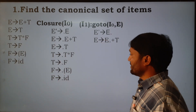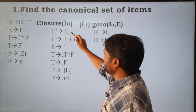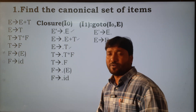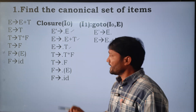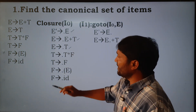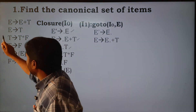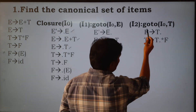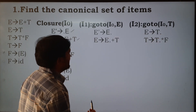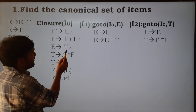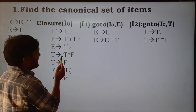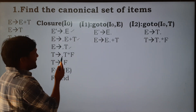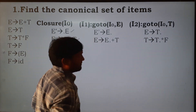E is over; next is capital T. If we apply the goto function for T — goto(I0, T) — E derives T. and T derives T. The dot symbol is moved one position to the right: E → T. and T → T.*F. This is I2.